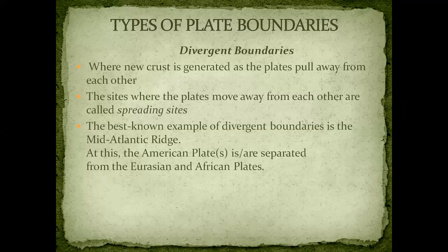Earthquakes that occur along these zones are called spreading centers and they are very small. When the plates pull away from each other and new crust is generated, this is basically the divergent boundary — these are zones where plates move away from each other. This is called a spreading site. They are relatively small. The best known example given in our book is the Mid-Atlantic Ridge.